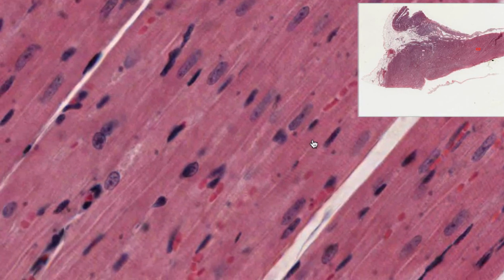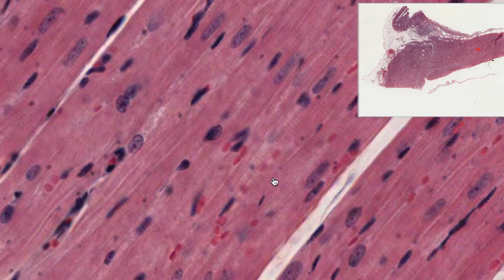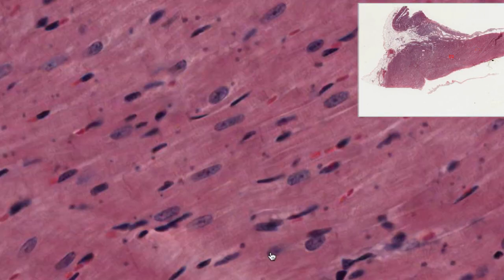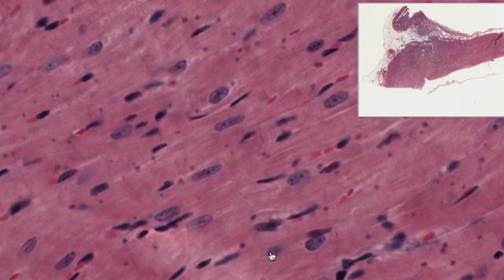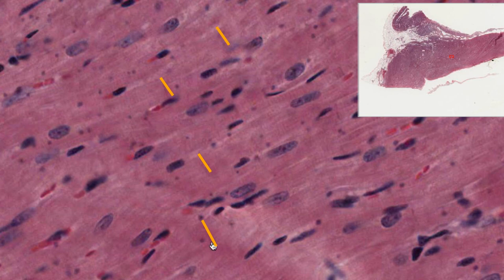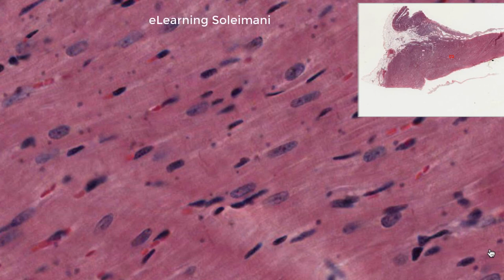Cardiac muscle is both striated and involuntary. In this view, intercalated discs are visible, which consist of junctions between the cardiac muscle cells, including gap junctions and desmosomes.